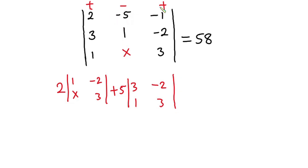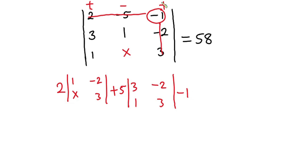Now let's consider this negative 1. The elements on this column and on this row are also not considered. The sign here is positive, but positive times negative is still negative, so we have negative 1 out front. Then we have the 2x2 matrix: 3, 1, 1, x.